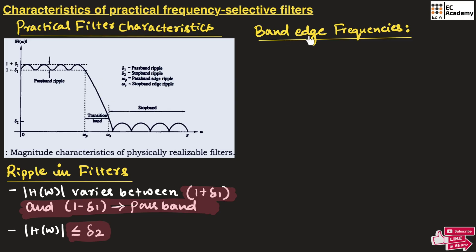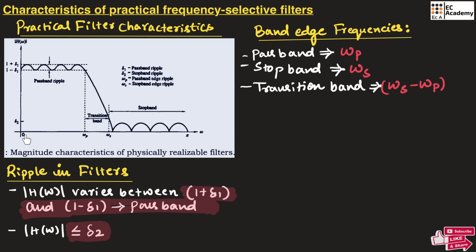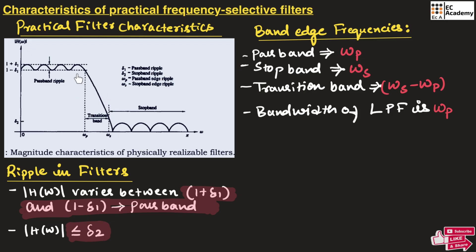Now let us talk about band edge frequencies. In the pass band, the edge frequency is denoted by omega p, and in the stop band, the edge frequency is denoted by omega s. The difference between omega p and omega s represents the transition band. For a low pass filter, the bandwidth is calculated at the pass band as 0 to omega p, so the bandwidth of a low pass filter is omega p. In a practical filter, the sharper the transition band, the closer the filter is to an ideal filter.